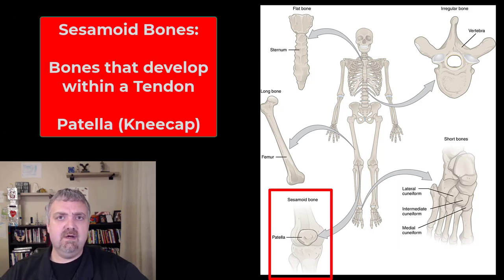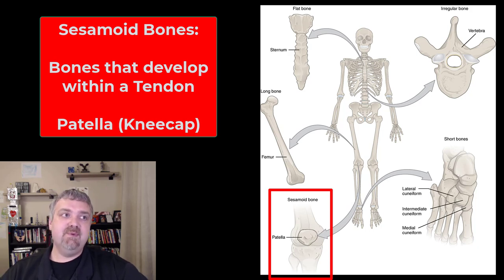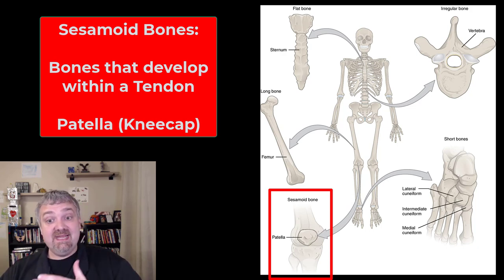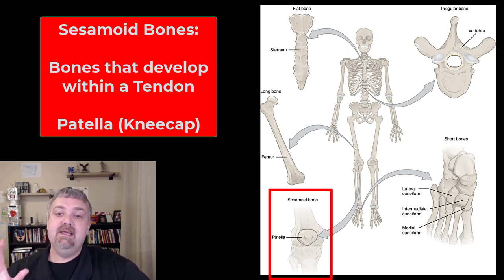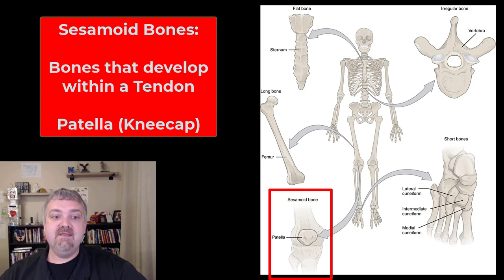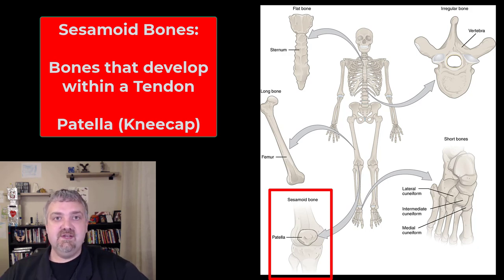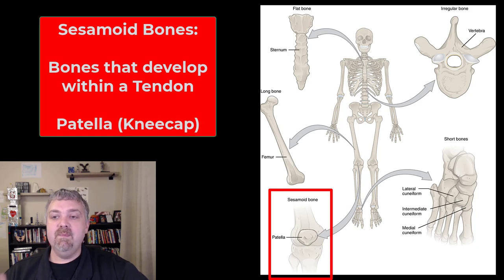Then you have sesamoid bones. Sesamoid bones are unique because they're bones that develop inside of tendons. Tendons are supposed to attach a muscle to a bone, but sesamoid bones grow in some of these tendons. Their job is to protect the tendon from being compressed, and they can also help change directions. The key example — the only one I'll ask you to know — is the patella, your kneecap, but they can also develop near your thumb and in other places in your hands and feet.